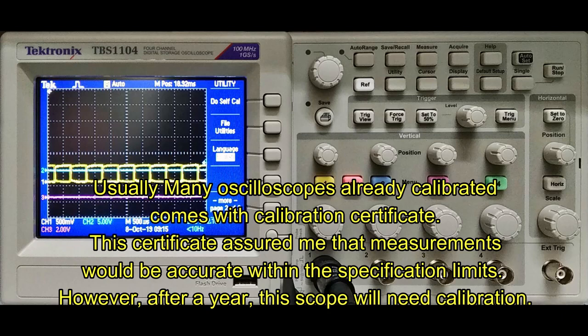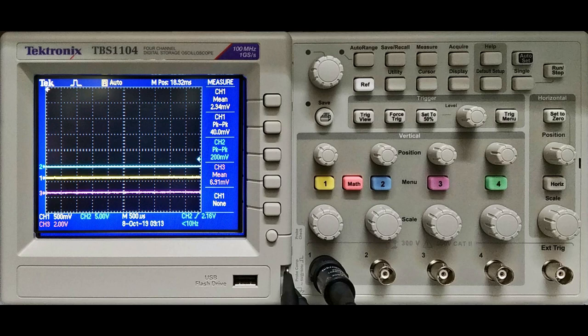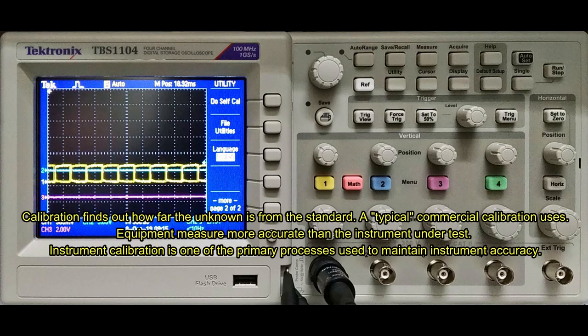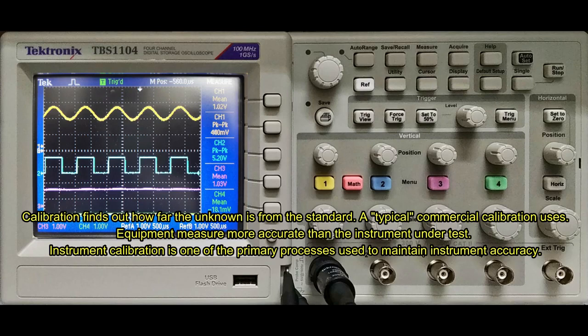However, after a year this scope will need calibration. What is calibration? Calibration finds out how far the unknown is from the standard. A typical commercial calibration uses equipment more accurate than the instrument under test.